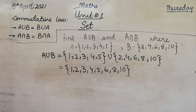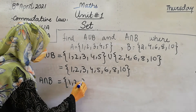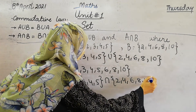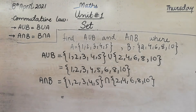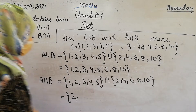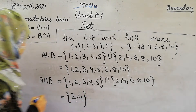Now to find A intersection B, where A is 1, 2, 3, 4, 5 and B is 2, 4, 6, 8, 10. Check which elements are the same in both sets. Starting from 1 — not the same. 2? Yes, write 2. 3? No. 4? Yes, 4 is also present in both sets. 5, 6, 8, 10 — not common. So the intersection of A and B is {2, 4}.